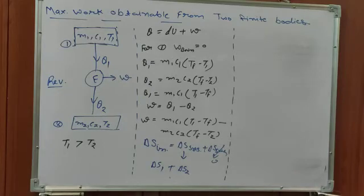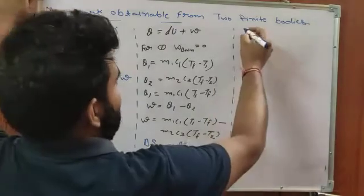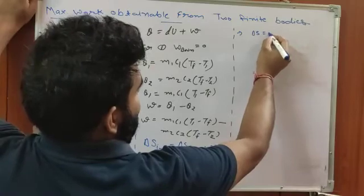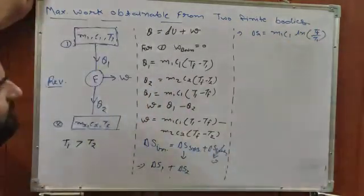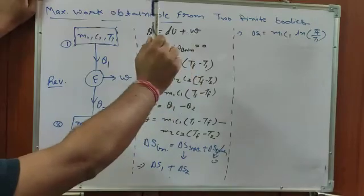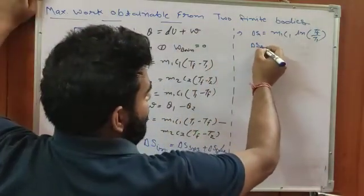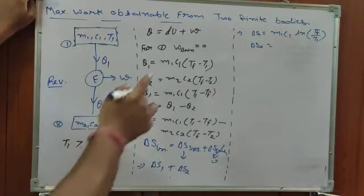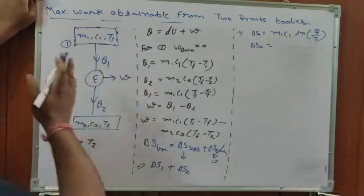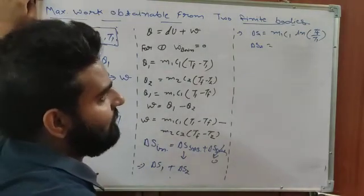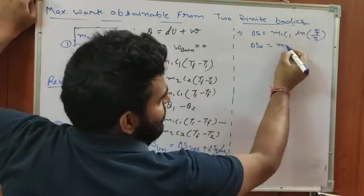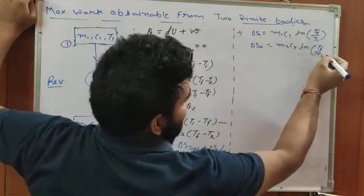We have already studied that the entropy change for any incompressible system is: ΔS1 equals M1·C1·ln(T_f / T1), and ΔS2 equals M2·C2·ln(T_f / T2). Finite bodies here means incompressible substance, not an ideal gas. So the entropy change of the universe is ΔS1 plus ΔS2.